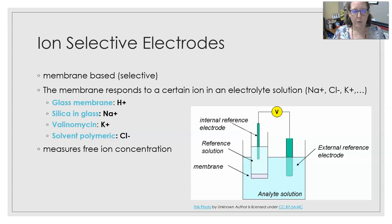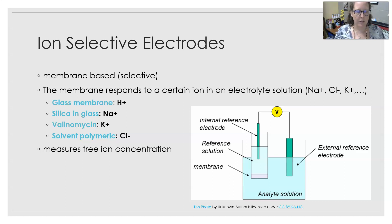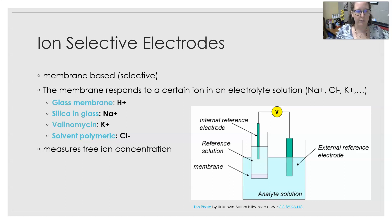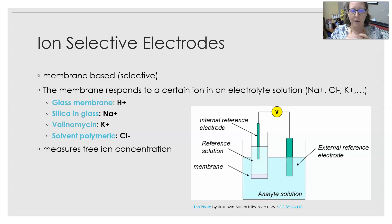A glass membrane that responds to hydrogen ion makes it a pH electrode. The silica in glass is the makeup of the sodium membrane in the sodium electrode. Valinomycin is the makeup of the membrane that measures potassium. The membrane that measures chloride is a solvent polymeric membrane. Each of these ion selective electrodes are separate and will each measure free ion concentration in the sample.